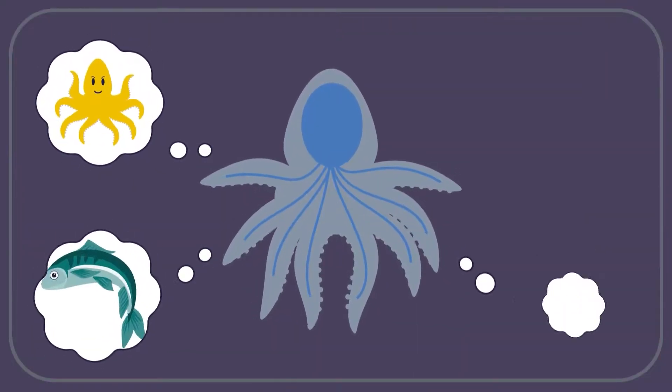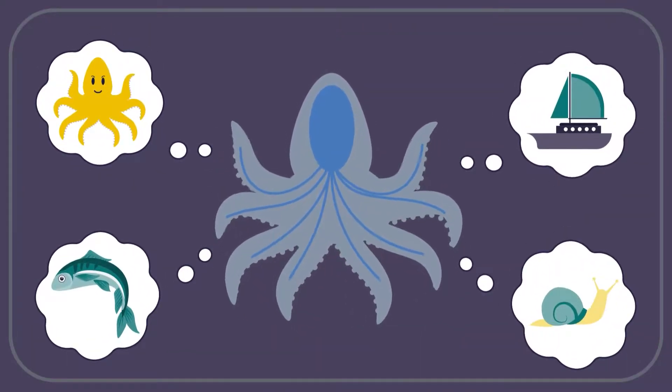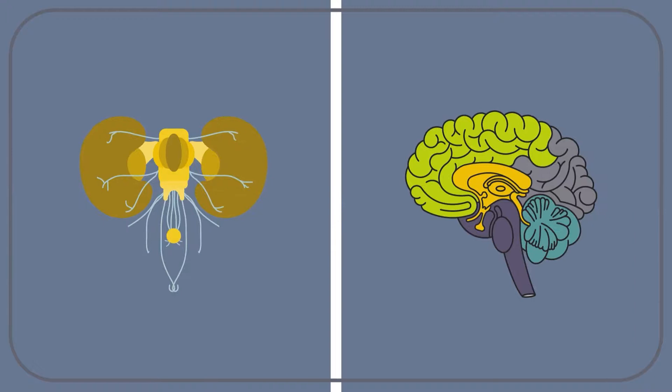This suggests that octopuses most likely have rich mental lives, even if they have brains that are very different from ours.